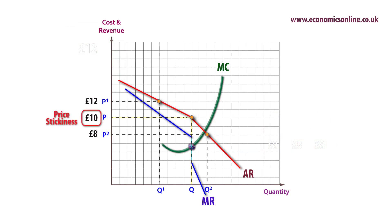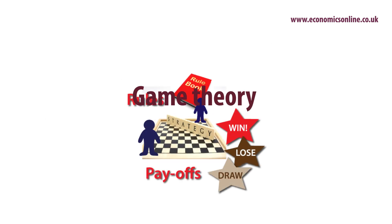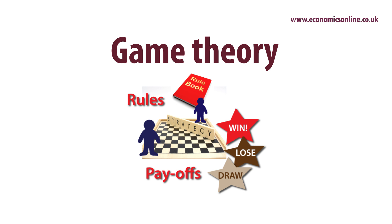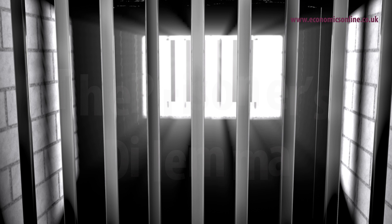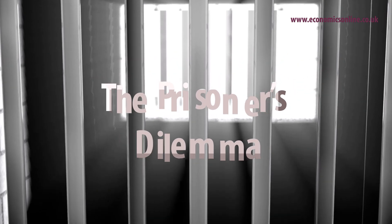The kinked demand curve illustrates the significance of interdependence and explains the tendency for price stickiness. Game theory can also be used to explain the behavior of oligopolists. All games have rules and payoffs, and require players to have strategies to enable them to gain a positive payoff or avoid a loss.